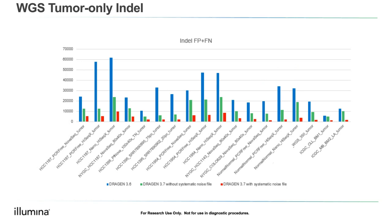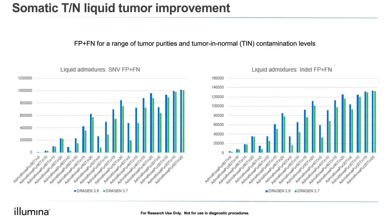This slide covers liquid tumor improvements. We show FP plus FN for a range of tumor purities — from 80% down to 20% — across various contamination levels from 5% all the way to 20%. This shows the profile of various purities and contamination levels and how Dragon improves from 3.6 to 3.7.